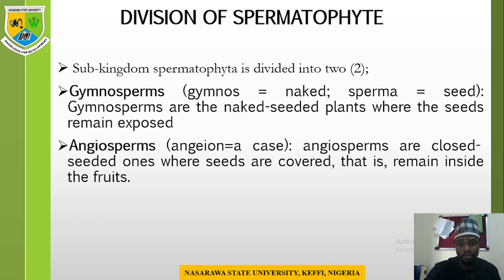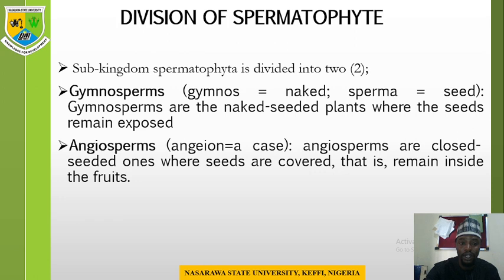The gymnosperms are the naked-seeded plants. The spermatophytes are seed-producing plants; however, some plants have naked seeds while others have enclosed seeds. Those in which the seeds are naked are regarded as gymnosperms — the naked-seeded plants — and the seeds remain exposed. The other division is the angiosperms, which are the enclosed-seeded ones. These are plants that have an enclosed seed; the seeds are covered and remain inside the fruit.